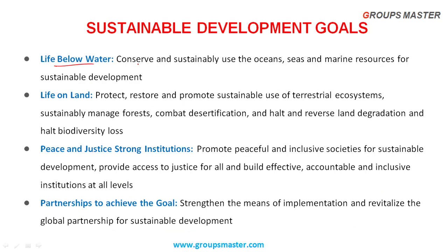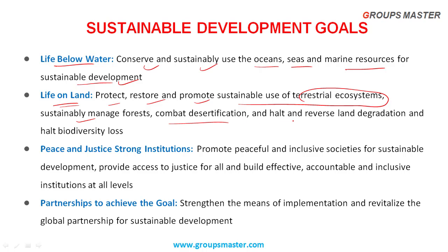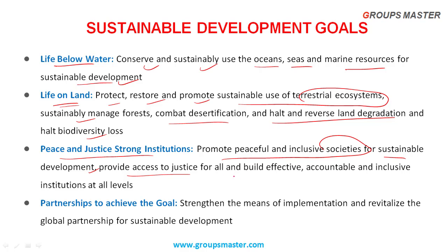Goal 14: Life Below Water — conserve and sustainably use oceans, seas, and marine resources for sustainable development. Goal 15: Life on Land — protect, restore, and promote sustainable use of terrestrial ecosystems, sustainably managed forests, combat desertification, halt and reverse land degradation, and halt biodiversity loss. Goal 16: Peace and Justice, Strong Institutions — promote peaceful and inclusive societies, provide access to justice for all, and build effective, accountable and inclusive institutions at all levels. Goal 17: Partnerships to Achieve the Goal — strengthen means of implementation and revitalize the global partnership for sustainable development. These are the 17 SDGs.